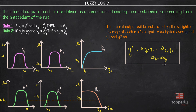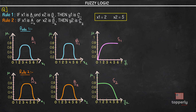Let's take a solved example to understand this concept better. We have been provided with two rules. Rule 1: if x1 is a1 and x2 is b1, then y1 is c1. Rule 2: if x1 is a2 or x2 is b2, then y2 is c2. The inputs are x1 = 2 and x2 = 5. We are also provided with graphs of fuzzy sets a1, b1, c1 and a2, b2, c2, where the membership functions of the consequent graphs are all monotonic. First, we find the corresponding membership values for x1 and x2.